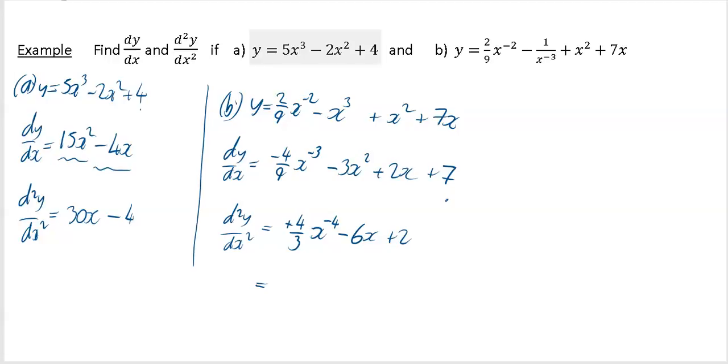I'll write this another way to show you can write this a bit nicer. It's not nice having negative powers. That's the same as 4 over 3x⁴, minus 6x + 2. That's it done.